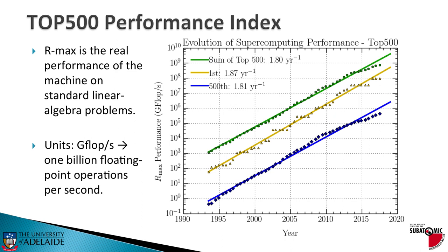What is that? It's the real performance that a supercomputer demonstrates when it's solving standard linear algebra problems. The units, in this case, gigaflops, which means one billion floating-point operations every second. So that's one billion multiplies, divides, adds, subtracts every second. That's the original unit.